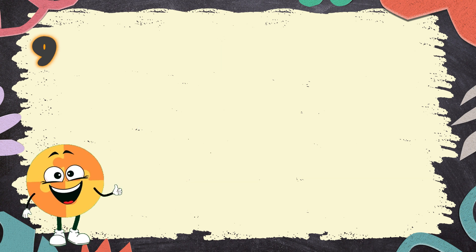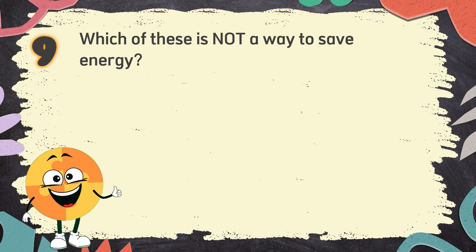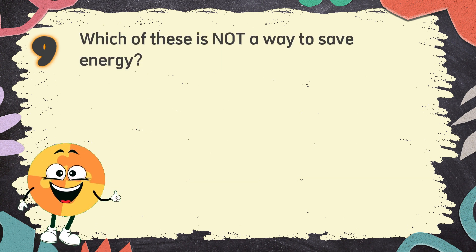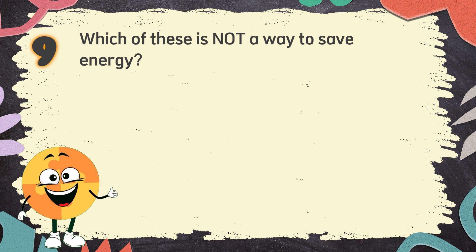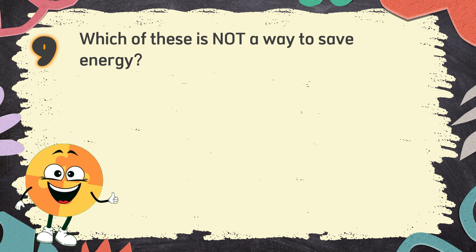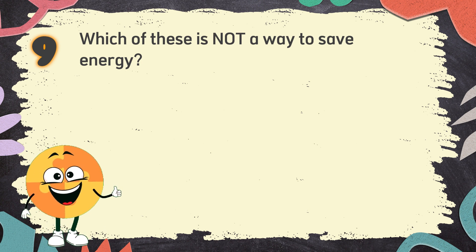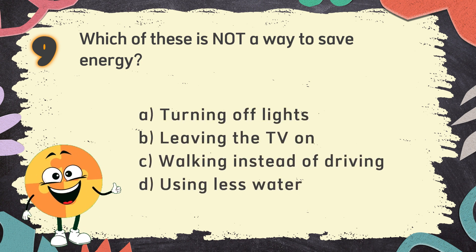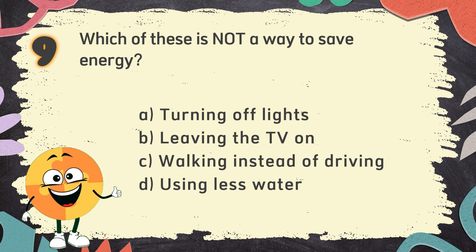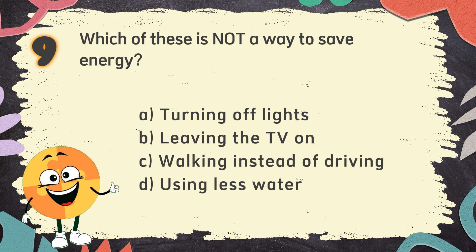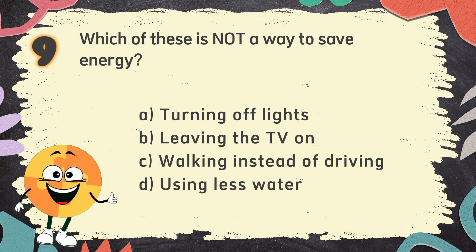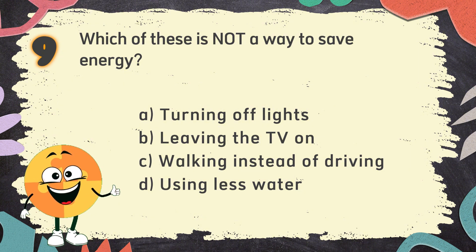Number 9. Which of these is not a way to save energy? The choices are: A. Turning off lights, B. Leaving the TV on, C. Walking instead of driving, D. Using less water.